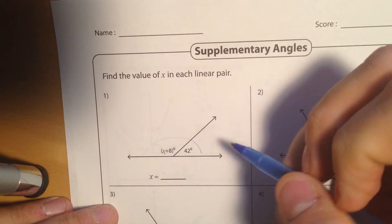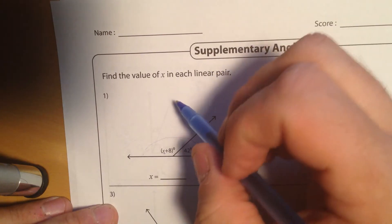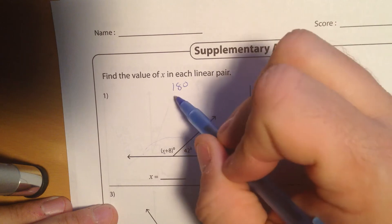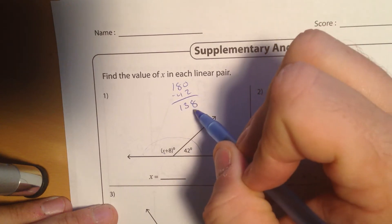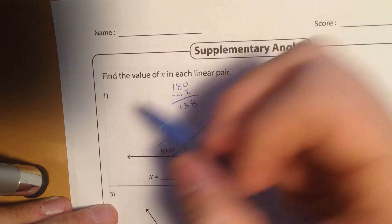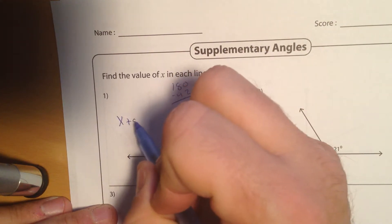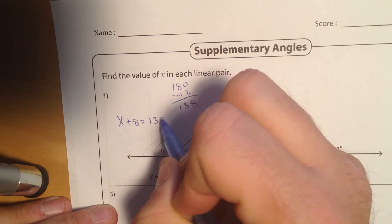So I'm trying to find just the x. If I have 180 degrees, I want to take away that 42. That's going to give me 138 degrees. So I know this here equals 138. So x plus 8 equals 138 degrees.